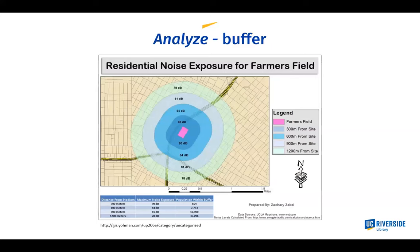Buffering is another great analysis tool. In this student project at UCLA, the pink rectangle represents a possible sports arena location. The student created buffers — zones at certain distances from that feature — and correlated them with noise levels. By looking at parcels underneath and knowing the number of people on each, you get a sense of how many people would be impacted by noise on game day.